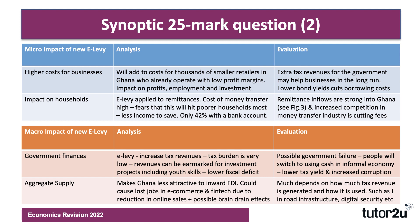On the aggregate supply side, some people think that this e-tax makes Ghana less attractive to inward FDI, particularly in e-commerce and fintech businesses that have been growing so quickly in recent times. So perhaps this tax could act as a disincentive for inward investment, leading to a reduction in online sales and possibly a brain drain effect, as younger people who have become attuned to mobile money transfer may decide to move elsewhere. Much depends, with evaluation, on how the tax revenue is used — it could be invested in road infrastructure or digital security systems, which would enhance aggregate supply.